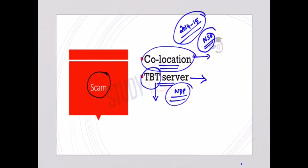Under co-location services, certain brokers got first access to the system and therefore received market data before other investors. A certain set of brokers, in consultation with NSE top officials, gained first access to NSE servers, giving them an unfair trading advantage. This was the scam.